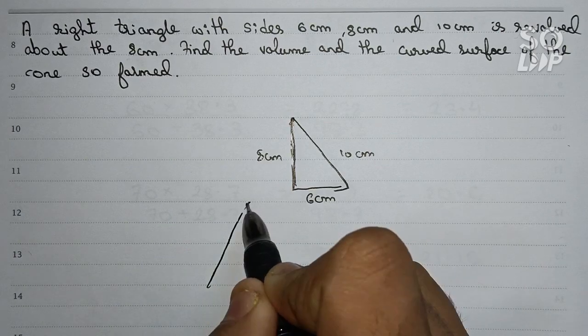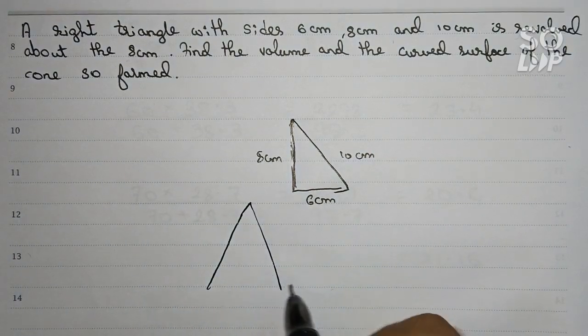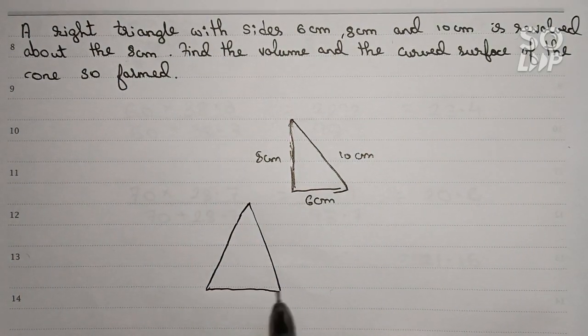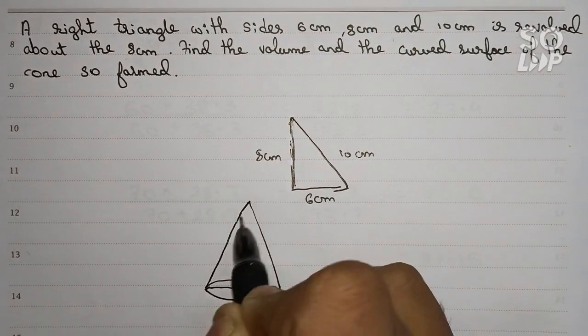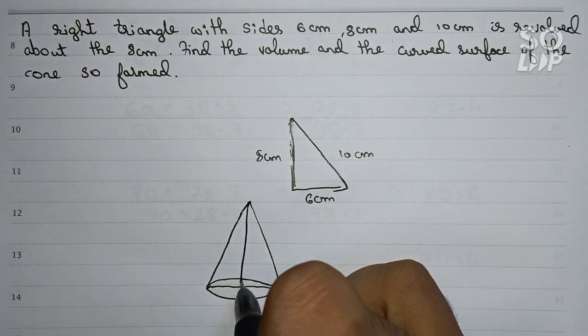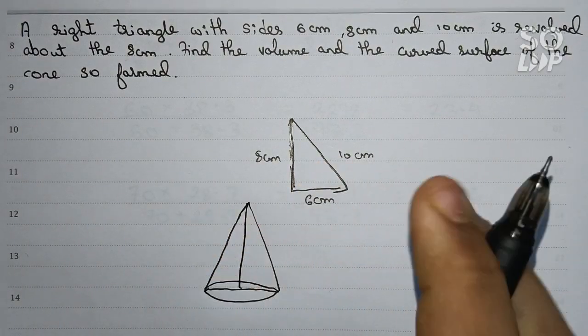So if we draw a cone like this, a cone is formed of a number of triangles. So if we take any triangle...